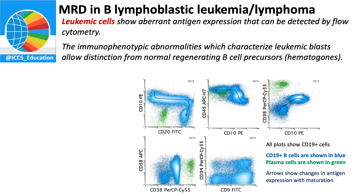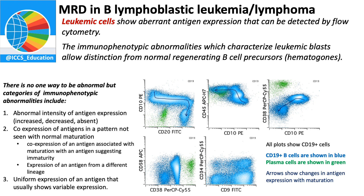When you understand normal patterns it's easier to identify the abnormal patterns. Leukemic cells will show these abnormal patterns of antigen expression and we can detect these by flow cytometry. The immunophenotypic abnormalities that characterize our leukemic blasts allow us to separate them from the normal regenerating B cell precursors or hematogones we expect to see in the marrow. It's important to note that there's not just one way to be abnormal — there are several categories. First, you might see abnormal intensity of an antigen — increased, decreased, or even absent expression. You might see co-expression of a very immature antigen with a mature antigen, and you might see uniform expression of an antigen that usually shows quite variable expression.